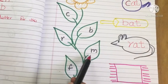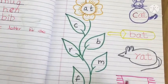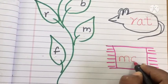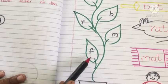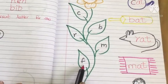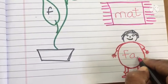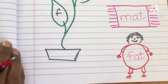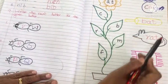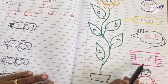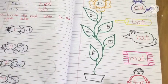What is the next letter? M + AT = mat. Write it. What is the next letter? F + AT = fat. Write it in the picture. Thank you kids.